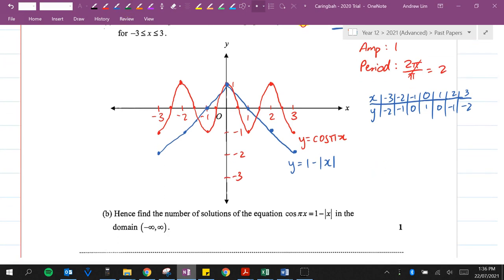Okay, hence, find the number of solutions of the equation cosine pi of x is equal to 1 minus the absolute value of x in the domain from negative infinity to infinity. So, we can see from negative infinity to infinity that this cosine curve is just going to keep on going like this, right? And the absolute value function is just going to keep going in this direction, which means it will never intersect again before minus 3, to the left of minus 3, and to the right of x equals 3. So, really, we are only concerned about where they intersect in the graph that we already drew. So, I'm just going to get rid of all of this.